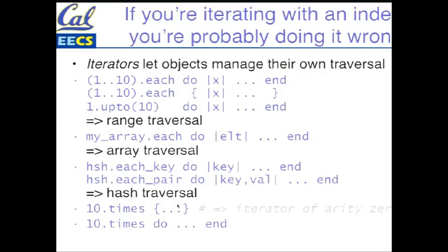We'll do a direct comparison in a moment. The examples we just saw — one was about traversing a range: for each item in that range, grab the item and do some stuff to it. I did upto, which has a starting point and an ending point. I could also have an array and say, each element in the array, I'll grab and do something with. I can take hashes — each key in a hash, or each pair, a key and a value together. And I did this really simple zero-arity iterator which just said some number of times do something.